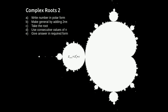Then we're going to make it general by adding 2mπ to the argument, because adding on multiples of 2π will keep us facing in the same direction. Then we're going to take the root using De Moivre's theorem, which means we take the root of the modulus part and divide the argument by the root — so for the cubed root we divide by 3, for the fourth root we divide by 4.